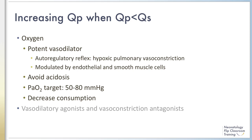The most potent vasodilator of the pulmonary bed is oxygen, thus optimizing oxygen content is a mainstay of PPHN management. The most available and efficacious therapy for PPHN is providing supplemental oxygen. Oxygen has direct relaxation effects on smooth muscle cells and inhibits hypoxic pulmonary vasoconstriction, which is an autoregulatory reflex. Acidosis may worsen hypoxic pulmonary vasoconstriction, so most centers aim for a pH greater than 7.25. It is important to consider that more is not always better — hyperoxia has been shown to precipitate paradoxical pulmonary vasoconstriction in animal models. Progressive evidence has led to sequential decreases in target PaO2 over the past decades, with commonly used PaO2 targets now ranging from 55 to 80.